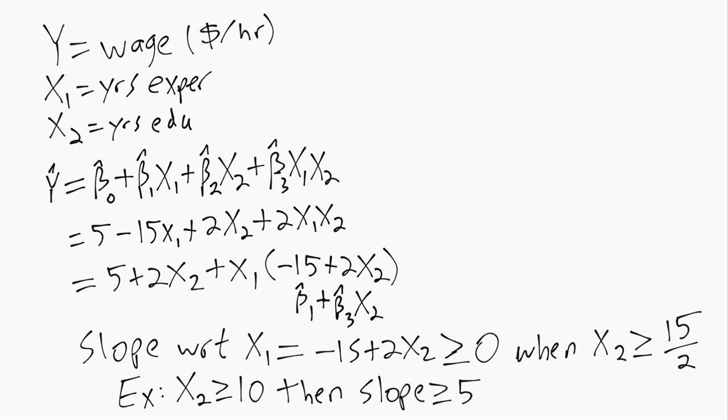So even though we have this negative slope on x1 in the linear term, that doesn't tell the whole story. We still need to look at the interaction term to figure out the relationship between y and x1.